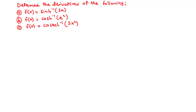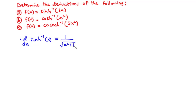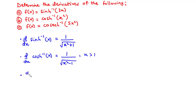So before we take these questions, let's consider some basic inverse hyperbolic functions. The derivative of sinh⁻¹(x) with respect to x is equal to 1 over the square root of x² + 1. The derivative of cosh⁻¹(x) with respect to x is equal to 1 over the square root of x² - 1, where x is greater than 1. The derivative of tanh⁻¹(x) with respect to x is equal to 1 over (1 - x²), where the absolute value of x is less than 1.